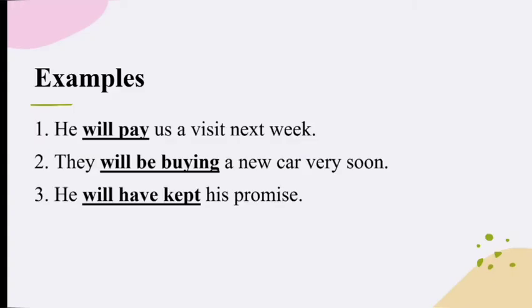Example 1: He will pay us a visit next week. Example 2: They will be buying a new car very soon. Example 3: He will have kept his promise. In these examples, the underlined words like 'will pay', 'will be buying', and 'will have kept' are referring to actions or events that are going to happen in the future.